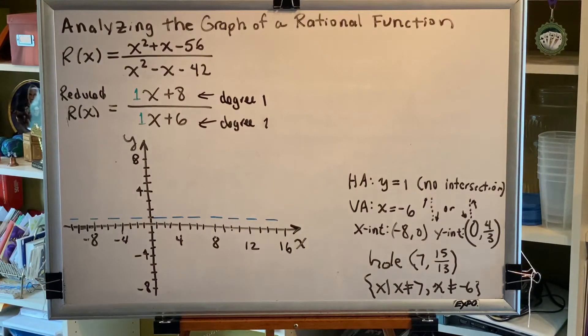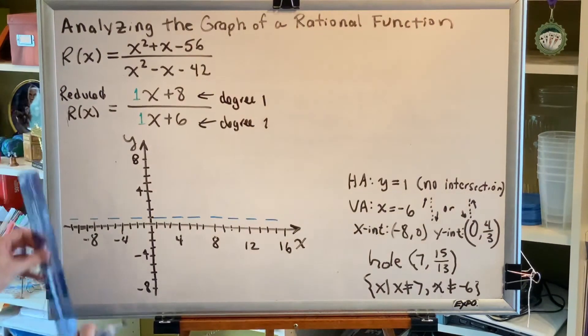While we're at it, I might as well go ahead and draw the vertical asymptote, x equals negative 6.